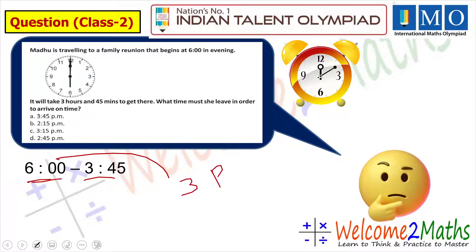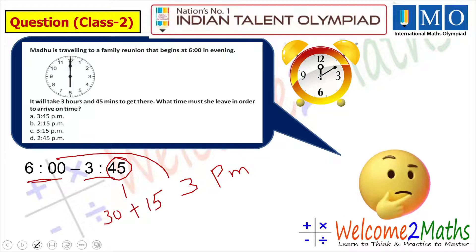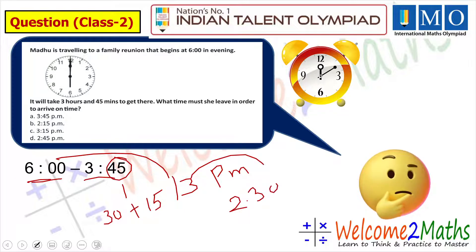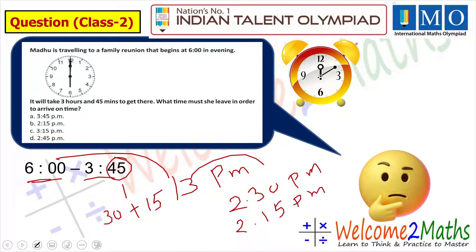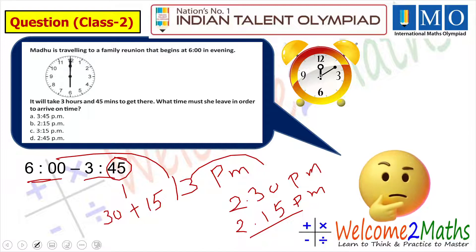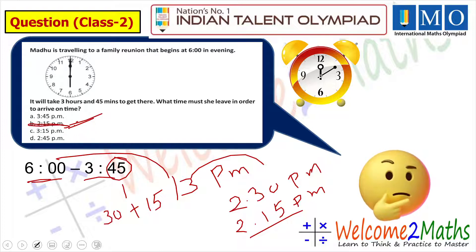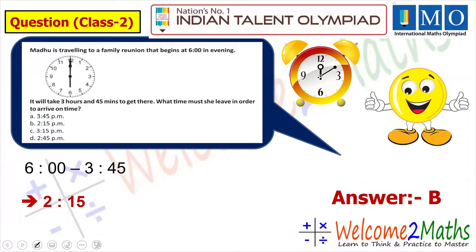Mentally: 3 hours before 6 pm is 3 pm. But we also have 45 minutes to subtract, so break 45 into 30 and 15. Starting from 3 pm: 30 minutes before 3 pm is 2:30 pm, and 15 minutes before 2:30 pm is 2:15 pm. So the answer is 2:15 pm. Looking at the four options, Option B shows 2:15 — that is the correct answer.